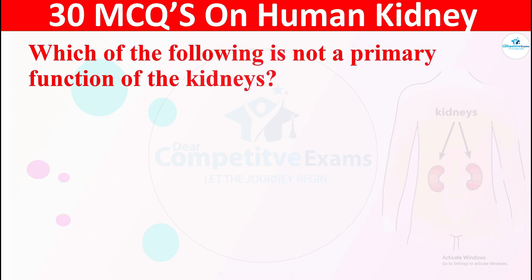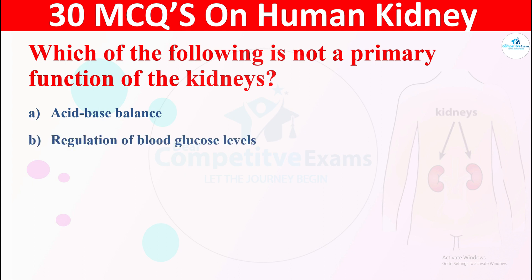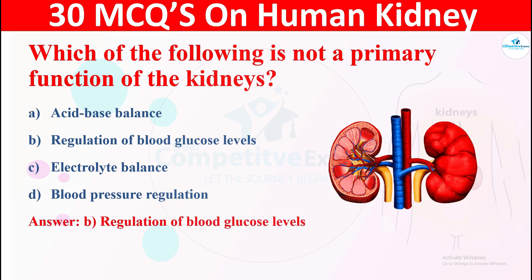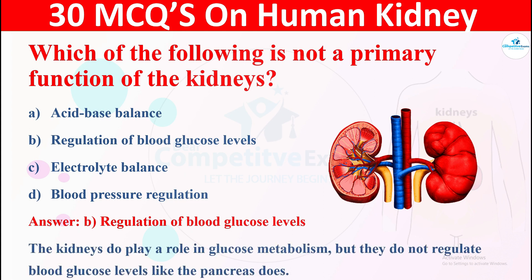Question 10: Which of the following is not a primary function of the kidneys? Options are: A) acid-base balance, B) regulation of blood glucose levels, C) electrolyte balance, or D) blood pressure regulation. The right answer is B, regulation of blood glucose levels. The kidneys do play a role in glucose metabolism but do not regulate blood glucose levels like the pancreas does.